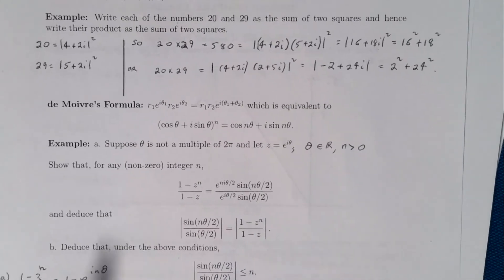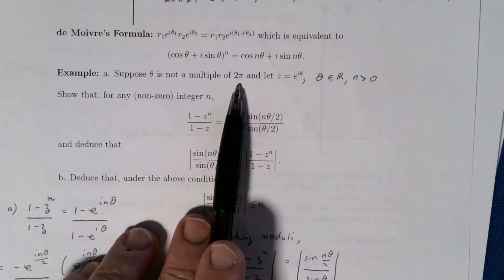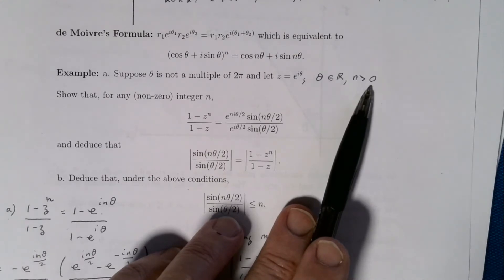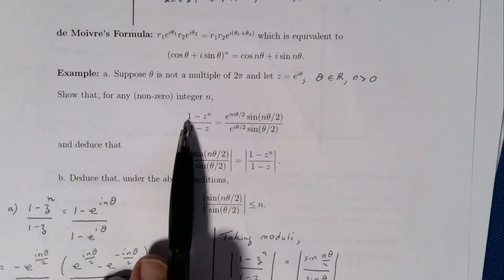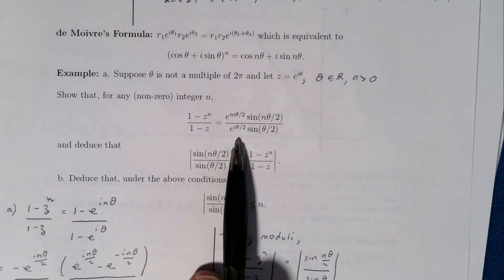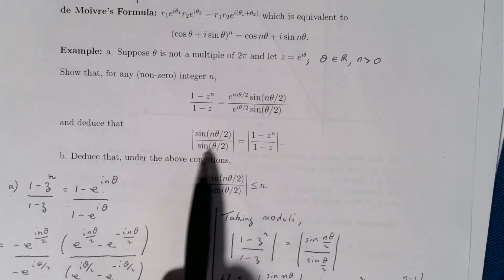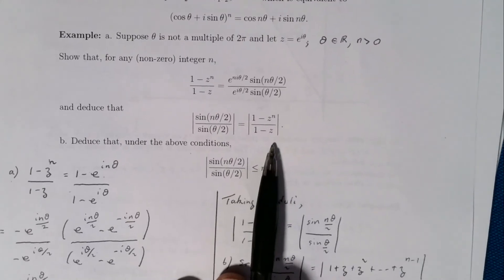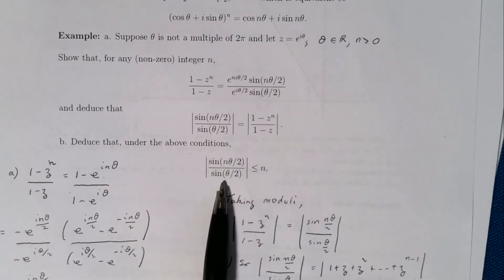As a nice, slightly harder example: we take θ real and not a multiple of 2π (lest we divide by zero), n a positive nonzero integer, and z = e^(iθ). We are asked to show that (1 − z^n)/(1 − z) simplifies to a given expression involving sin(nθ/2) and sin(θ/2), and then deduce that the absolute value of sin(nθ/2) over sin(θ/2) equals the modulus of that expression. Finally, deduce a bound on that absolute value.